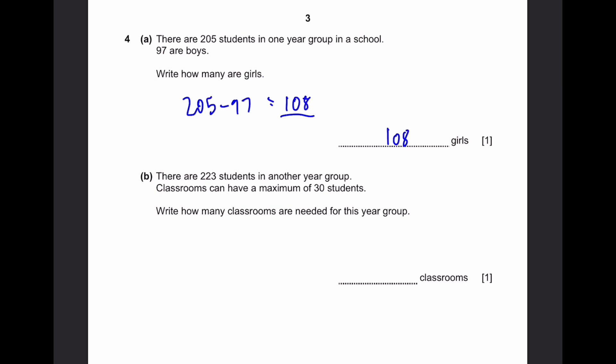B. There are 223 students in another year group. Classrooms can have a maximum of 30 students. Write how many classrooms are needed for this year group. So this year group has 223. So we just divide by 30. We get 7 with the remainder 13. And we need an extra classroom for them. There's 13 left, so it's 8 classrooms. That's the answer.